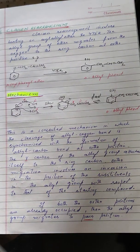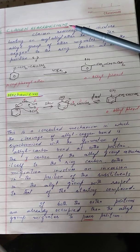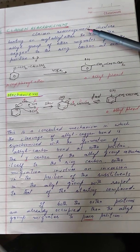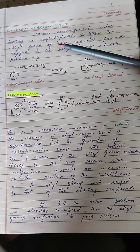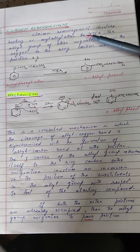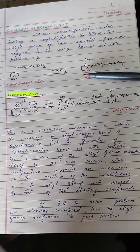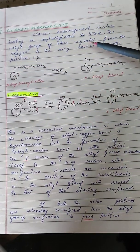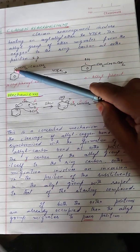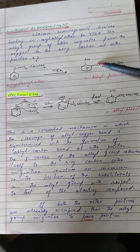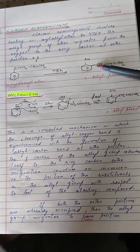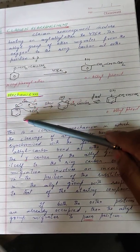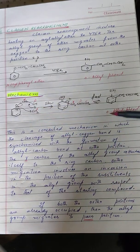The next section is Claisen rearrangement. Claisen rearrangement involves heating an aryl allyl ether to 475 K. The allyl group of the ether migrates from the oxygen to the ring carbon at the ortho position, as shown here. The mechanism is a concerted mechanism.